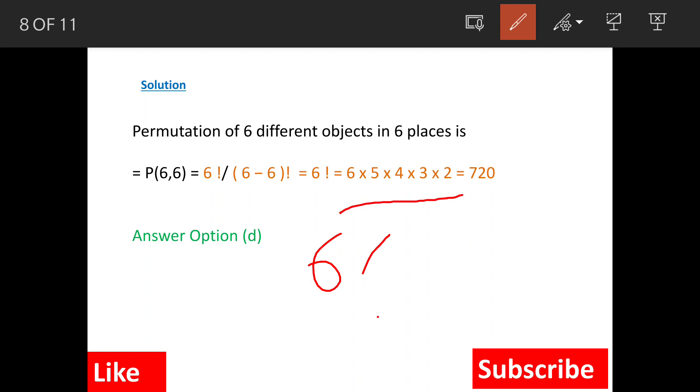So now we have to simplify factorial six. Factorial six means six into five into four into three into two, which equals seven hundred and twenty. The answer is option d, seven hundred and twenty.